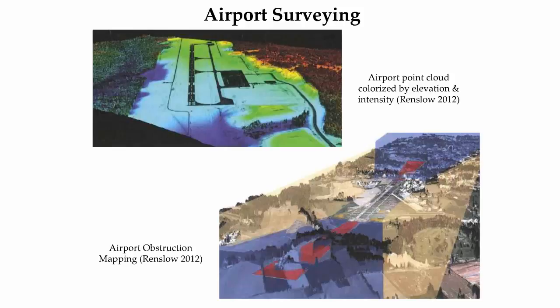Airborne LiDAR data is also used extensively in airport surveying applications, including topography and feature mapping for airport GIS as shown in the top left image, runway surveys, and airport obstruction surveys as shown in the right image. These airport obstruction surveys are invaluable for safety purposes as the data is used to detect buildings, power lines, communications towers, and vegetation that may affect runway approach and takeoff for aircraft.